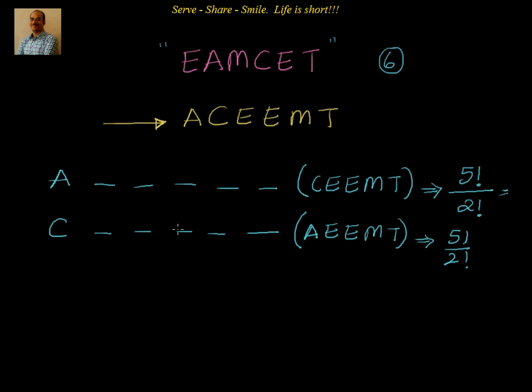Because 5 letters are factorial 5 ways, you can do that. But 2 letters are repeating, 1 letter is repeating 2 times. E is repeating 2 times. So it will be factorial 5 by factorial 2.